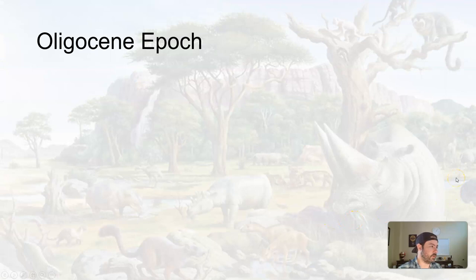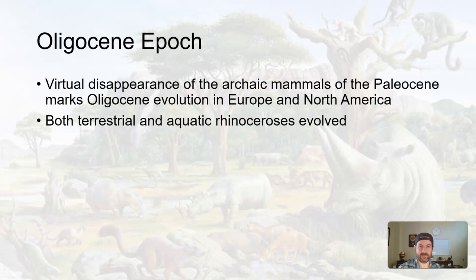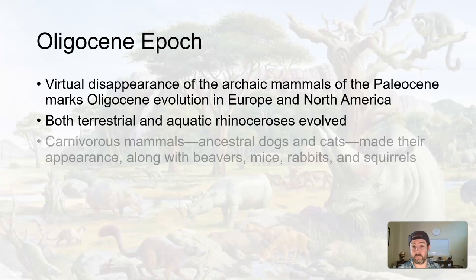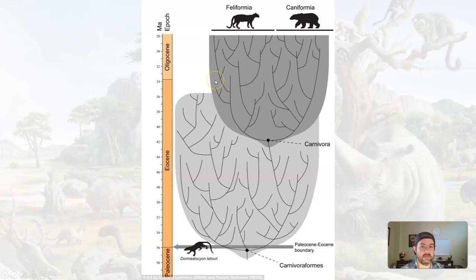Continuing on to the Oligocene epoch. We get a virtual disappearance of some of those archaic mammals of the Paleocene, which marks Oligocene evolution in Europe and North America. Things are evolving to what we know now — they seem a little more similar to modern animals than they did at the beginning of the Cenozoic. Things like terrestrial and aquatic rhinoceroses evolved. Carnivorous mammals — the ancestral dogs and cats — make their first appearance, along with beavers, mice, rabbits, and squirrels.